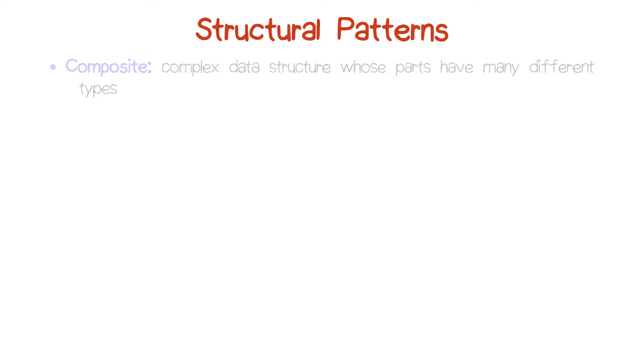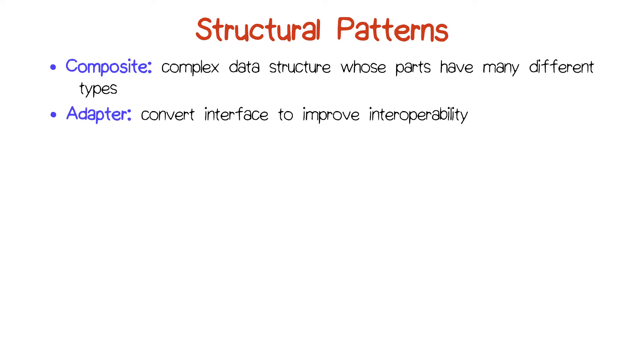The next category of patterns in the Gang of Four book are the structural patterns, of which the composite pattern is an example we've already seen. Some other ones provided include the adapter pattern, which you would use to convert an existing interface to look like another interface.